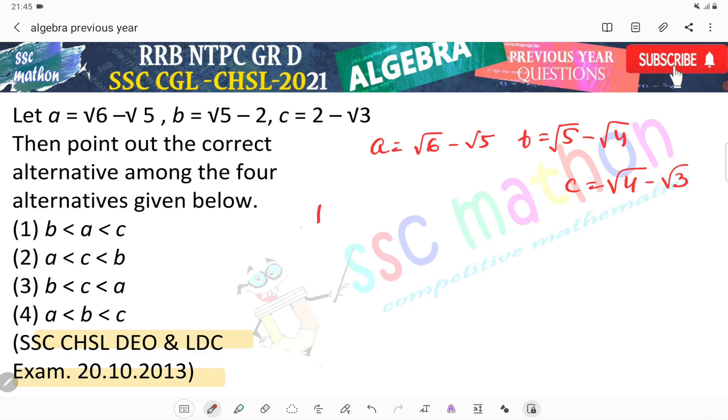What is it? 1 by root A. 1 by root 6 minus root 5. 1 by B, 1 by root 5 minus root 4. 1 by C, 1 by root 4 minus root 3.